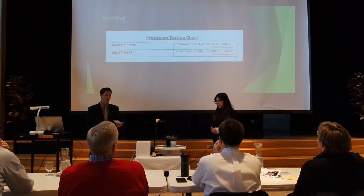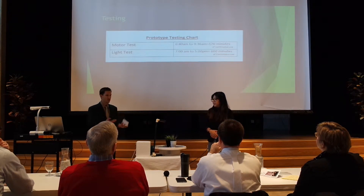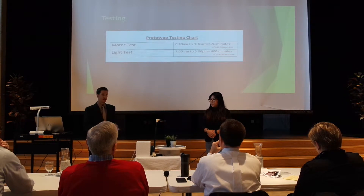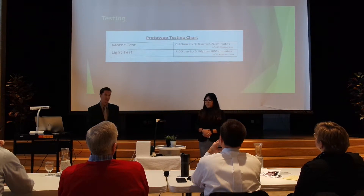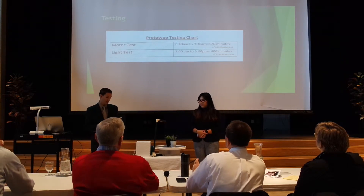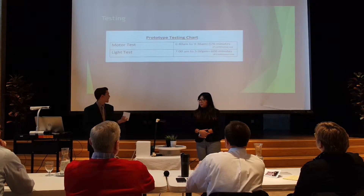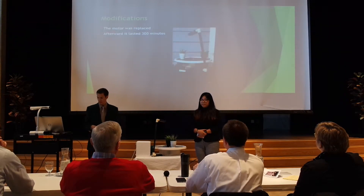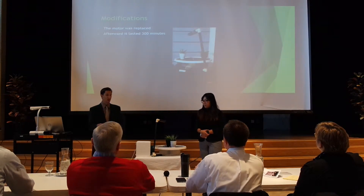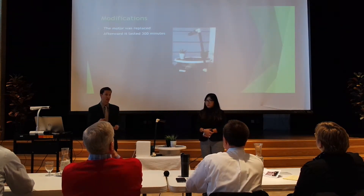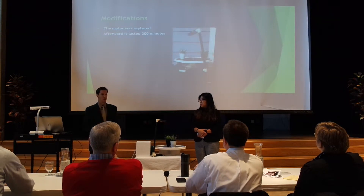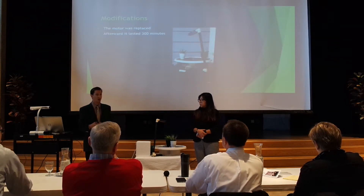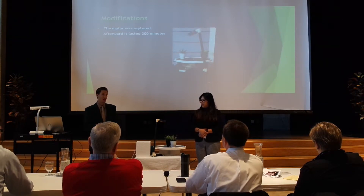For our testing, we had two tests: we tested the light to make sure it could last throughout the day, and we tested the motor to make sure it could last throughout the day. For the first test, our motor only lasted 176 minutes; we wanted it to last around 300 to 400 minutes. Our light lasted up to 600 minutes, which was perfectly fine for our use case. After modifications, we replaced the motor and it ended up lasting 300 minutes. We also had to replace the solar panel because during our first dry run of the presentation, the solar panel stopped working — after replacing it, it works a lot better.